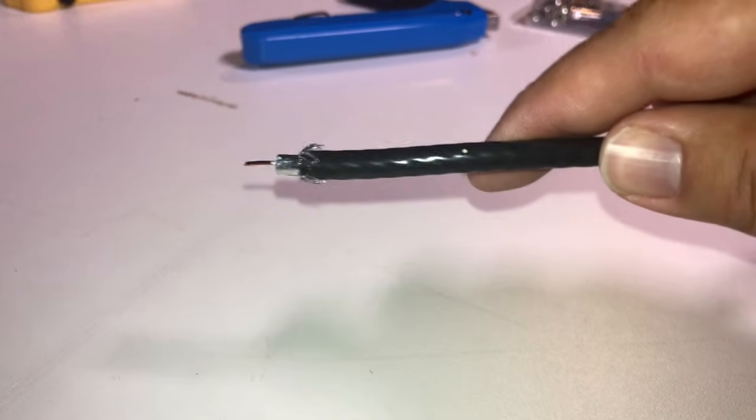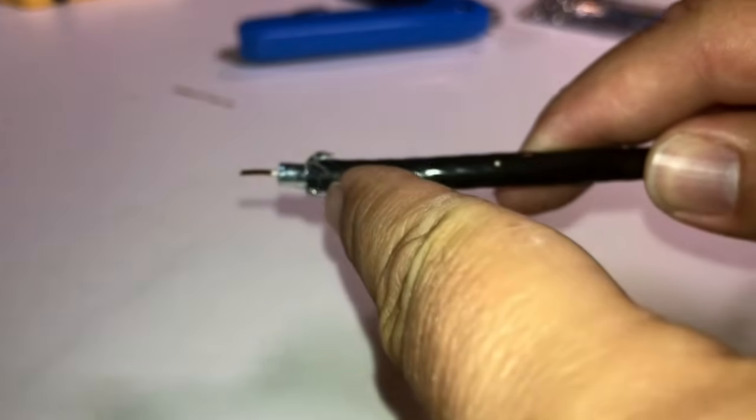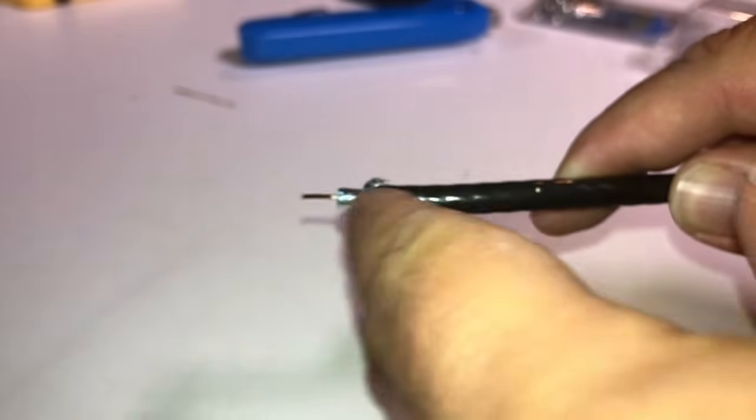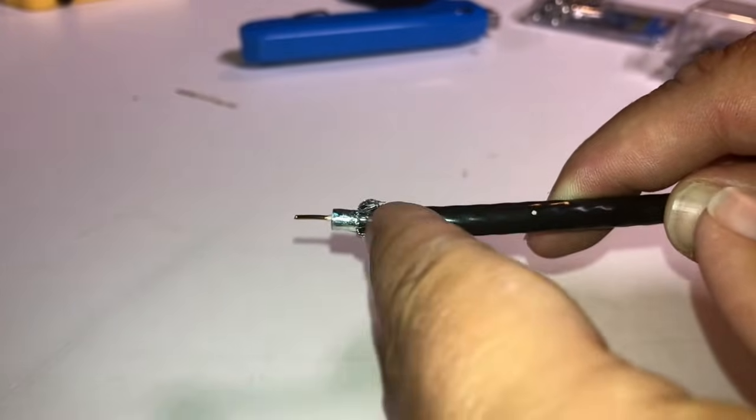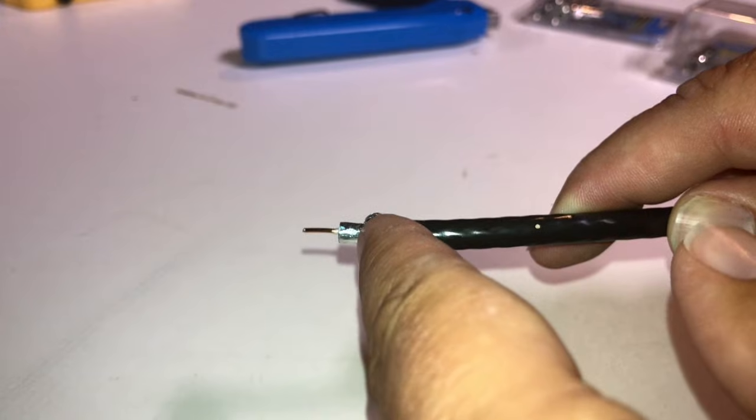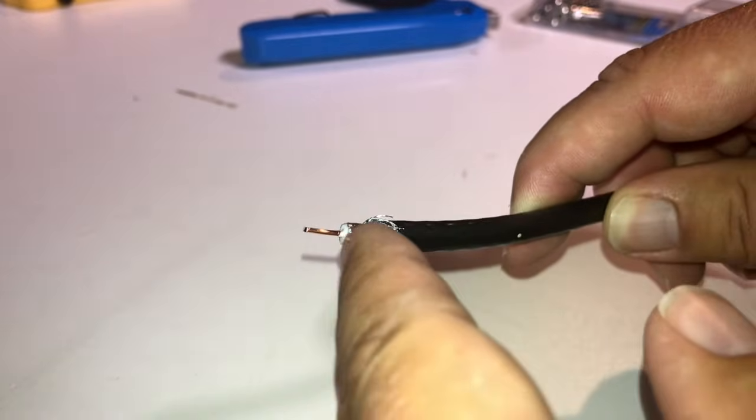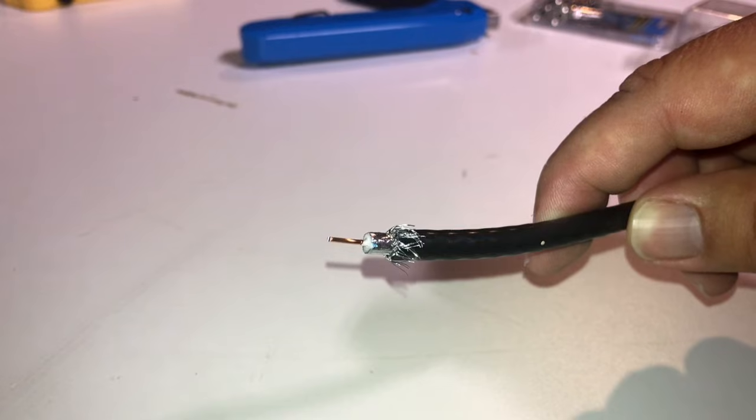You can see now that I have pulled back this outer braid as much as possible. We still have just kind of a, it's almost like a tin foil coating on the outside. We've got a plastic on the inside, and then we've got our main conductor on the inside.